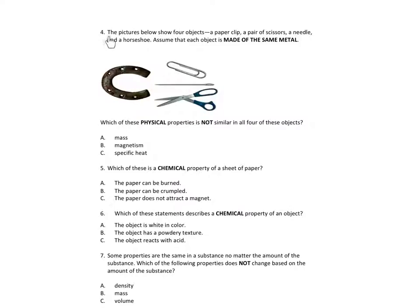Number 4. The pictures below show four objects: a paper clip, a pair of scissors, a needle, and a horseshoe. Assume that each object is made of the same metal. Which of these physical properties is not similar in all four of these objects? A. Mass, B. Magnetism, C. Specific heat.